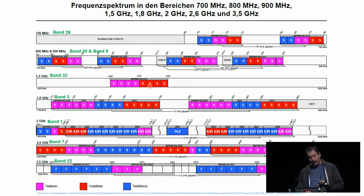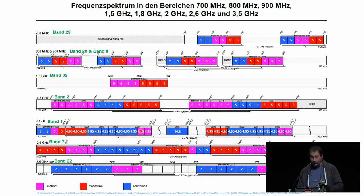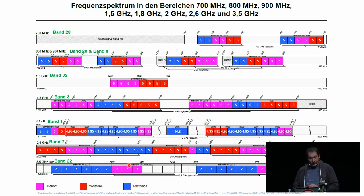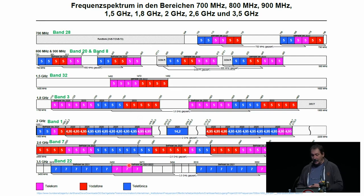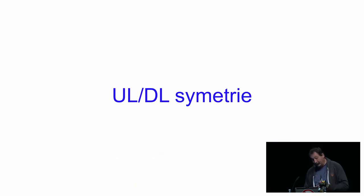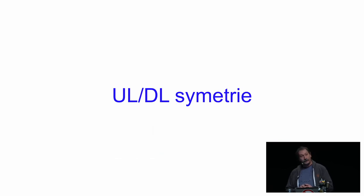Downlink rates can be increased by using this band. We also have 1.8 GHz, 2 GHz primarily used for UMTS/3G, and 2.6 and 3.5 GHz. For anyone interested, check the Bundesnetzagentur — the federal communications agency — website.